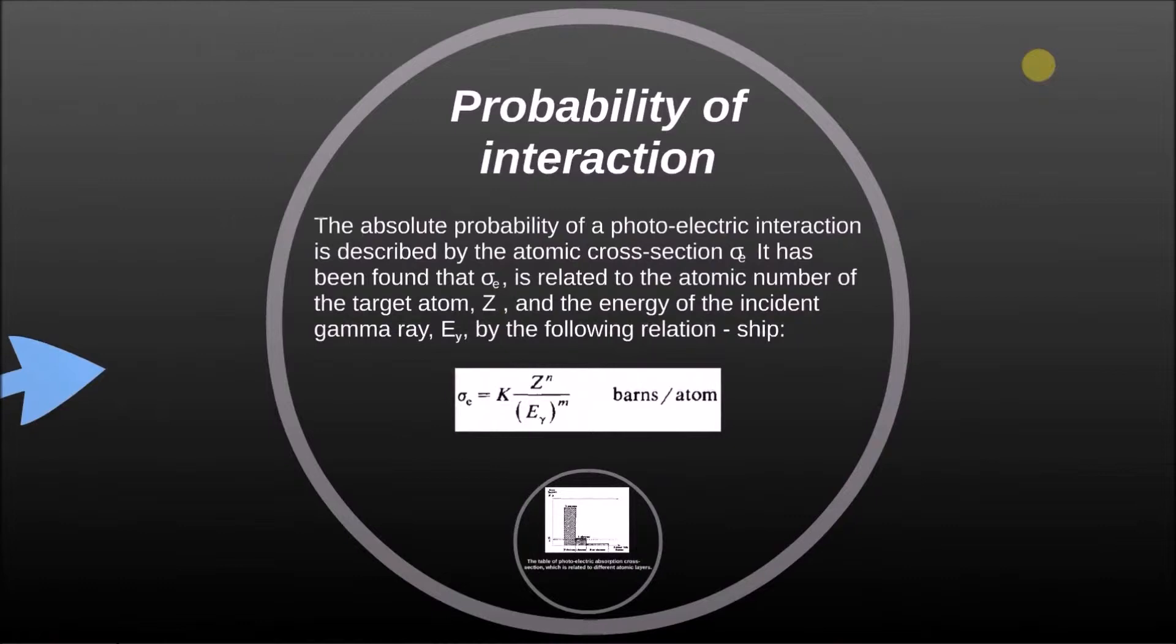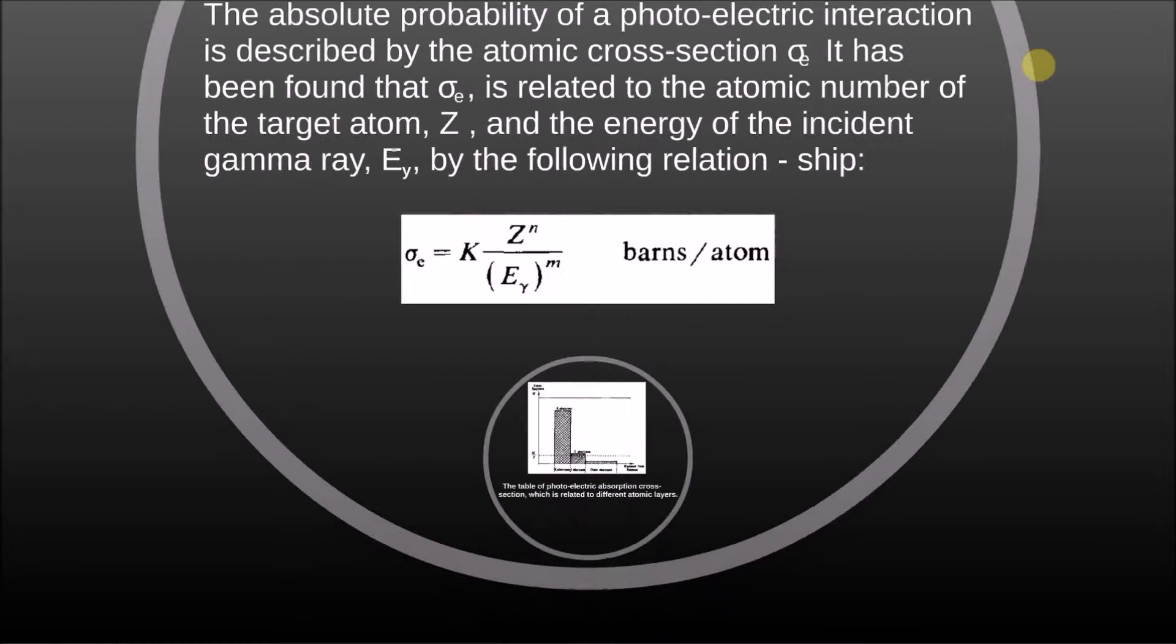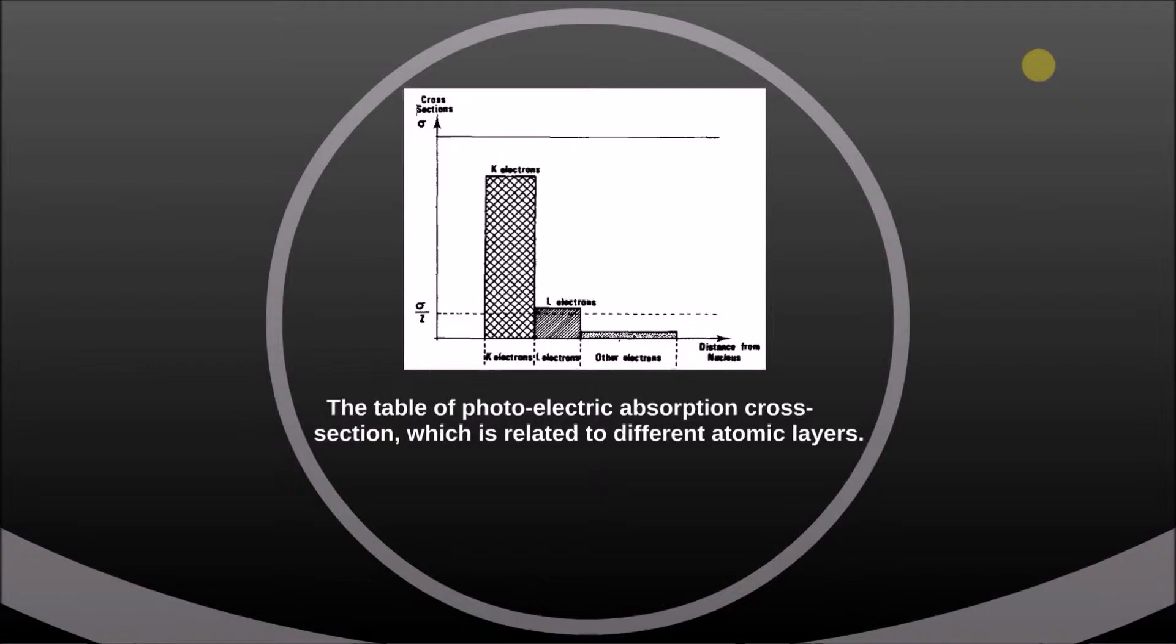Probability of interaction: The absolute probability of photoelectric interaction is described by the atomic cross-section. It has been found that sigma is related to the atomic number of the target atom Z and the energy of the incident gamma ray E by the following relationship. This table is a photoelectric absorption cross-section which is related to different atomic layers.